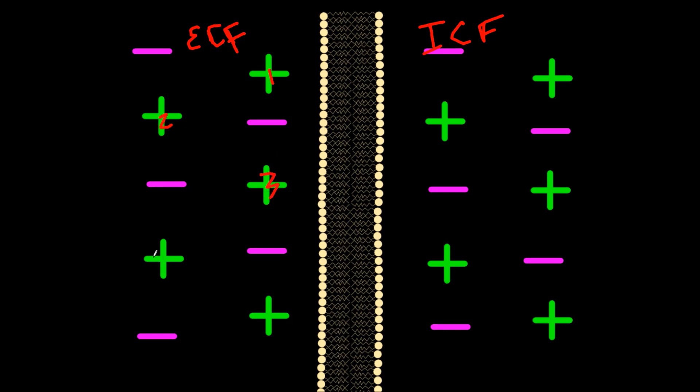Looking at this diagram, we have the cell membrane — a bilipid membrane — down the middle. On the right-hand side is the intracellular fluid, and on the left-hand side is the extracellular fluid. Counting up the charges: 5 positive and 5 negative on the outside, and 5 of each on the inside. This gives us plus 0 on the outside and plus 0 on the inside — no difference, so there's no potential on this membrane.